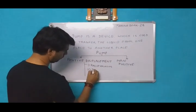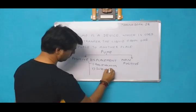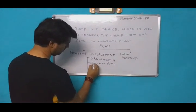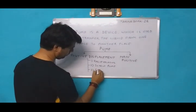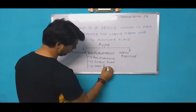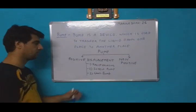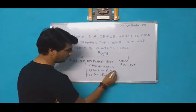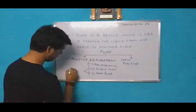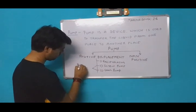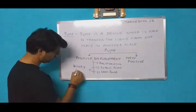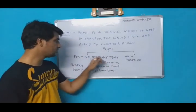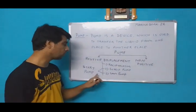Number two is the screw pump, and number three is the gear pump. So these are the positive displacement type pumps: reciprocating pump, screw pump, and gear pump. The screw pump and gear pump are rotary pumps. So positive displacement type pumps are the reciprocating pump and rotary pumps.